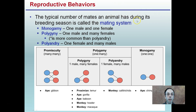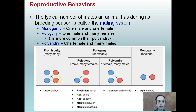The typical number of mates an animal has during its breeding season is called the mating system. Monogamy is one male and one female. Polygamy is one male and many females. Polyandry is one female with many males. Looking at ape and monkey species — chimps practice monogamy, one male and one female. Polygamy, one male and many females, is much more common in the world of apes and monkeys.